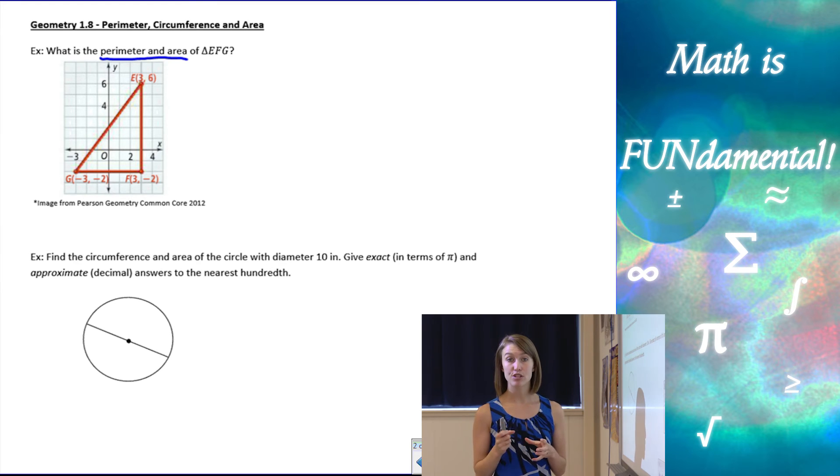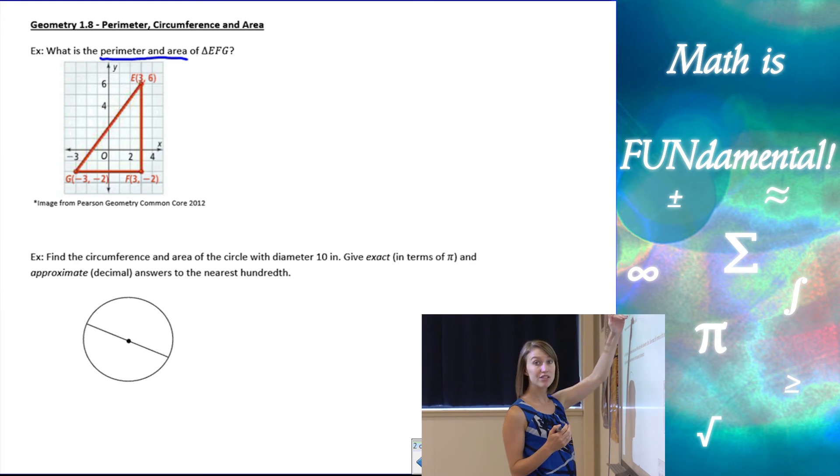So perimeter, remember, is just the length of all the sides. Now, for the horizontal and vertical sides, I can just simply count the lengths. So here I go from negative 3 all the way to positive 3, so that's going to give me 6 units. And then vertically, I go from negative 2 to 6, which gives me 8 units.